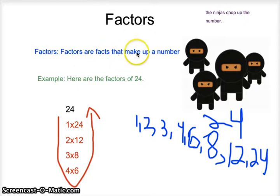So factors are facts that make up a number. Example, here are the factors of 24. So factors of 24 are 1 times 24, 2 times 12, 3 times 8, 4 times 6.